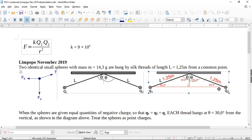If these two are the same, then you know this is actually an isosceles triangle. Because if you've got two sides that are the same length, you have an isosceles triangle. And it also says to you, each thread hangs at theta equals 30 degrees. So you draw in your 30 degrees, you draw in your 30 degrees. So 30 plus 30 is 60.